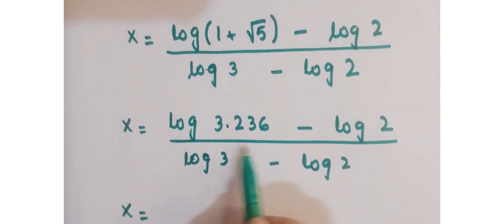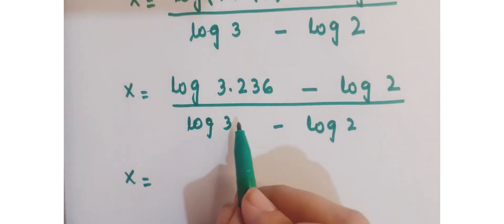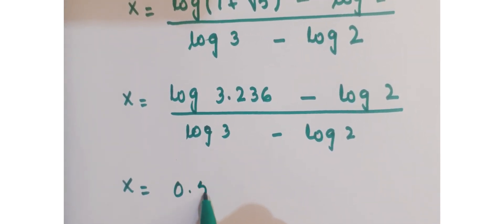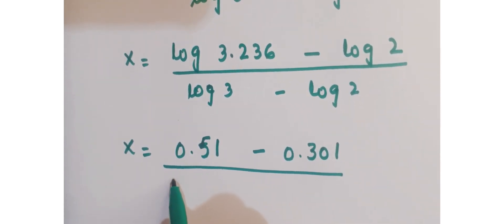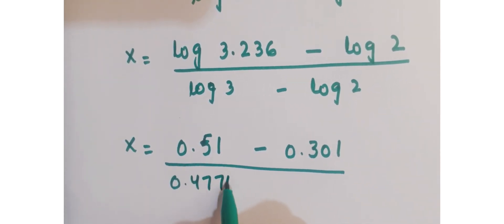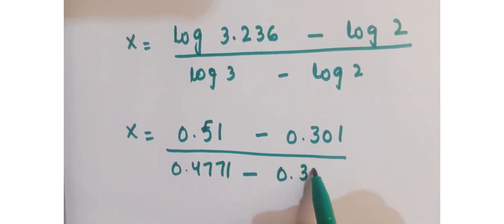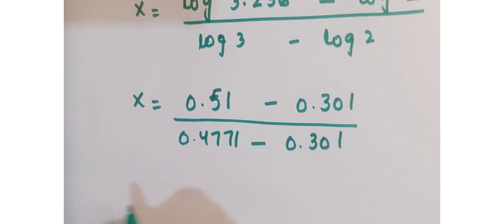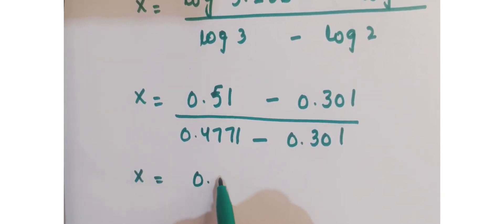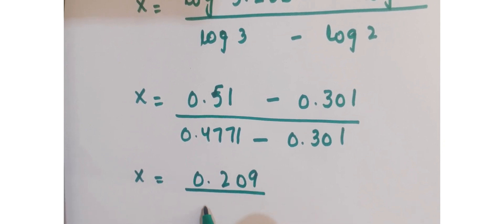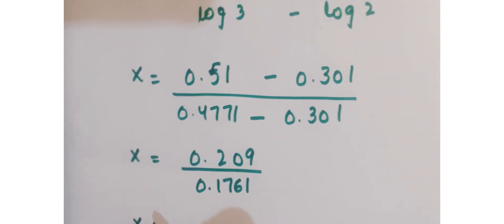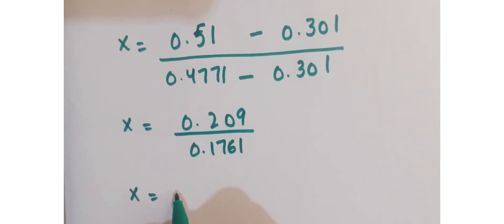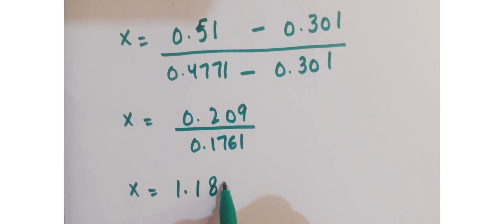Further, just from the calculator, we get the value of log of 3.236 as 0.51, and log of 2 has a value 0.301. Log of 3 has a value 0.4771, and log of 2 has a value 0.301. So after simplification, we get 0.209 in the numerator and 0.1761 in the denominator, and hence x equals 1.1868.